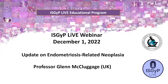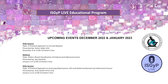Upcoming sessions for the ISGIP Live Educational Program: first, on December 1st, we have an update on endometriosis-related neoplasia by Professor Glenn McCluggage from the UK. On December 8th, there's a slide session on a practical approach to cervical biopsies by Dr. Esther Elder. In January, pattern-based classification of endocervical adenocarcinoma by Dr. Kay Park, and a slide session on a practical approach to assessing myo-invasion, LVSI, and nodal involvement by endometrial carcinoma by Dr. Amy Jolin-Price. I can personally say that I learn a lot from this education program and it's well worth signing up.